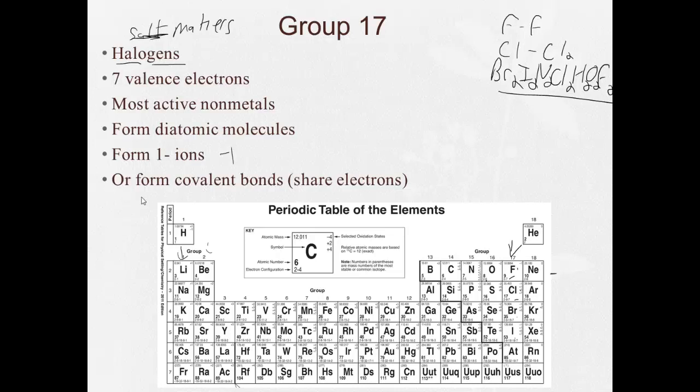Or they'll form covalent bonds. Covalent bond is a type of bond where they share electrons. There's more on that in our next unit.